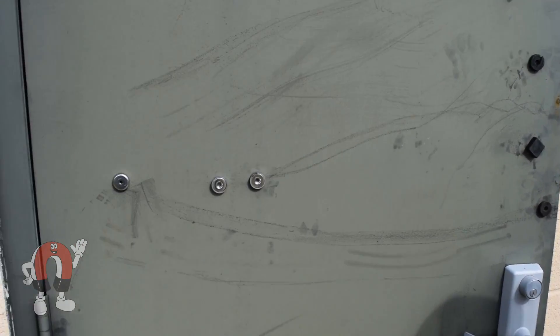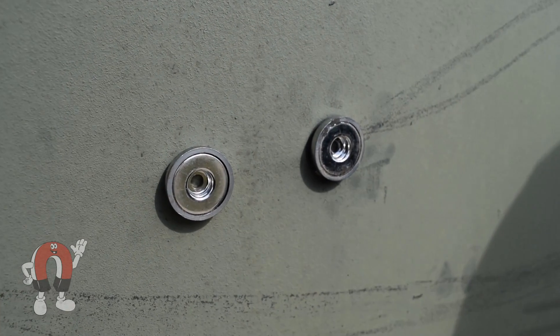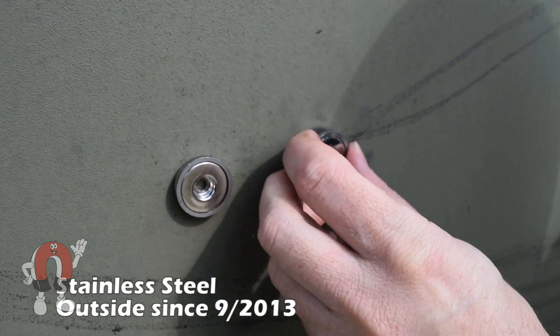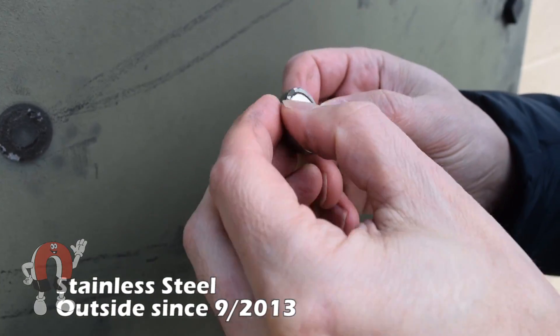Here are some other magnets that have been on an outside door for some time now. The stainless steel mounting magnets have been outside for nearly seven years and they look great.